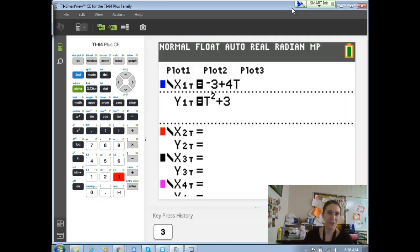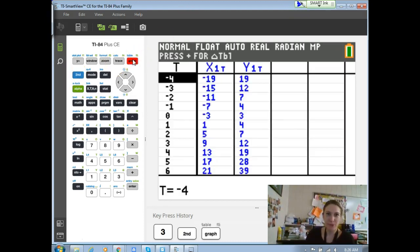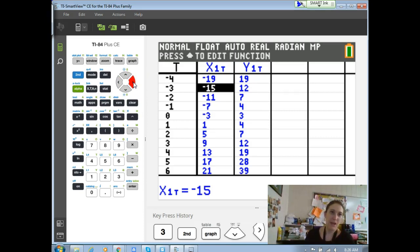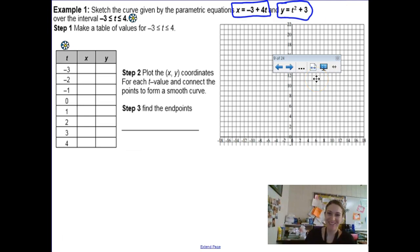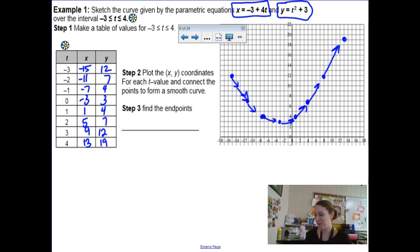So we have our parametric functions typed in. And I'm going to go to our table. And it's just in ask mode. So I'm just going to scroll around until I see what I need. They want from negative 3 to 4 seconds. So I'm copying all these ordered pairs into my table. Negative 15, 12, and so on. Pause the video so you can do this as well. So I graphed all the ordered pairs that we came up with on the interval from negative 3 to 4. And then I drew in some arrows indicating what direction this object is flying. And then the two important points that we need to point out are the endpoints. So the beginning and the end endpoints here are negative 15, 12 and 13, 19. Those endpoints are going to come into play later on.